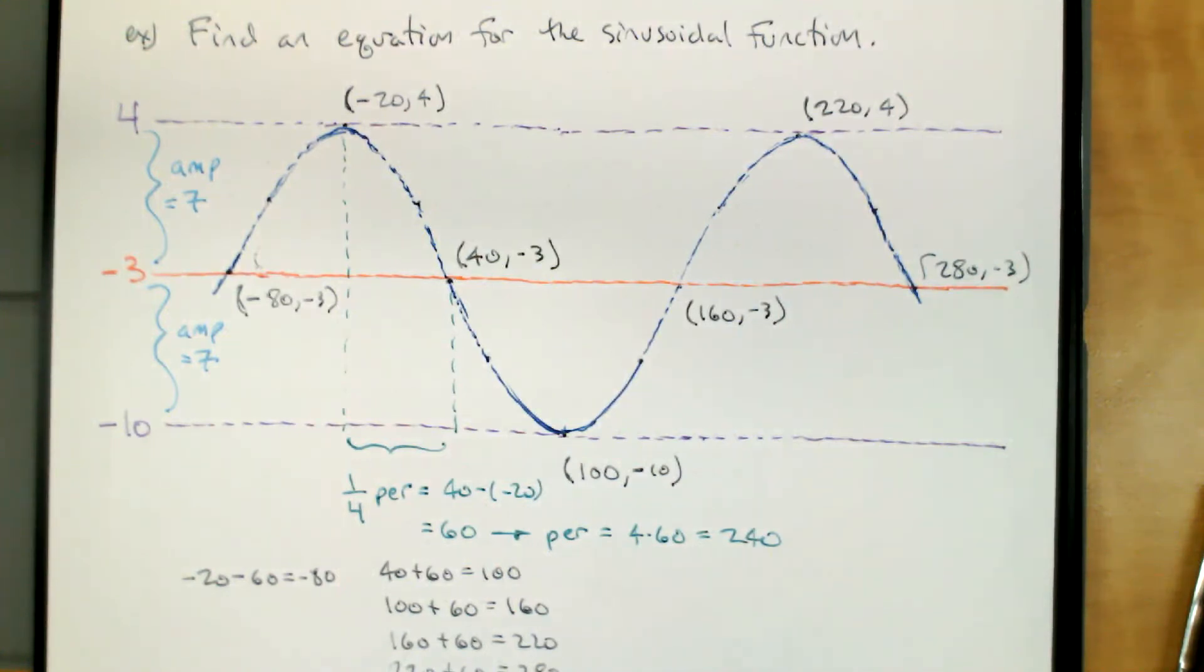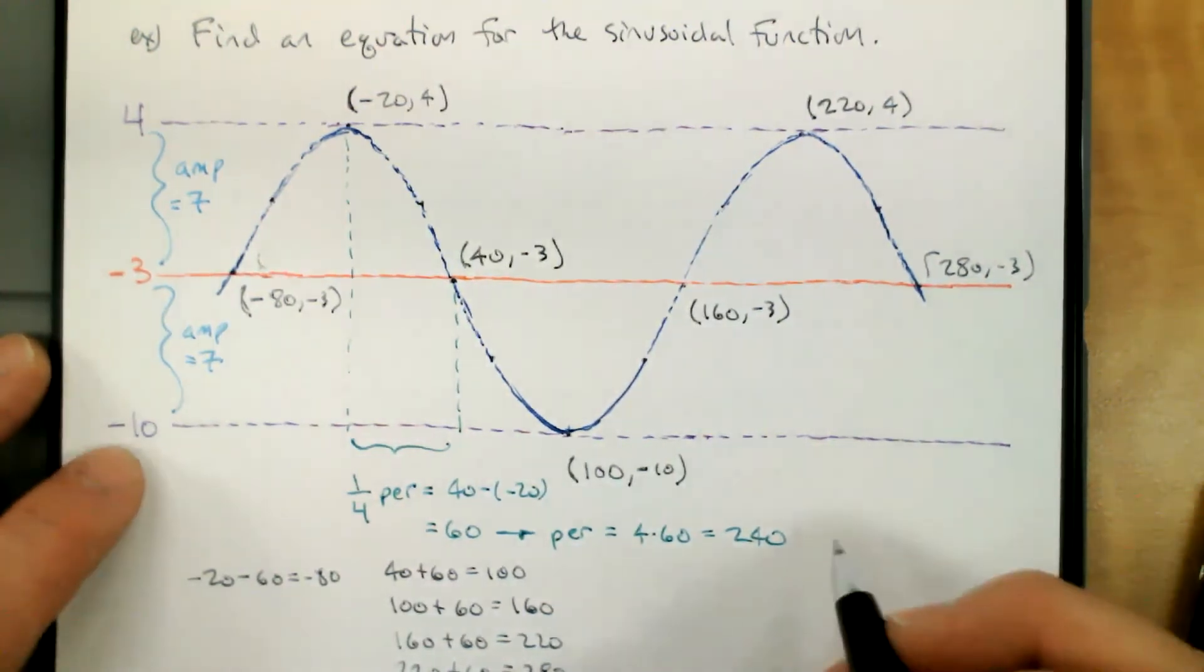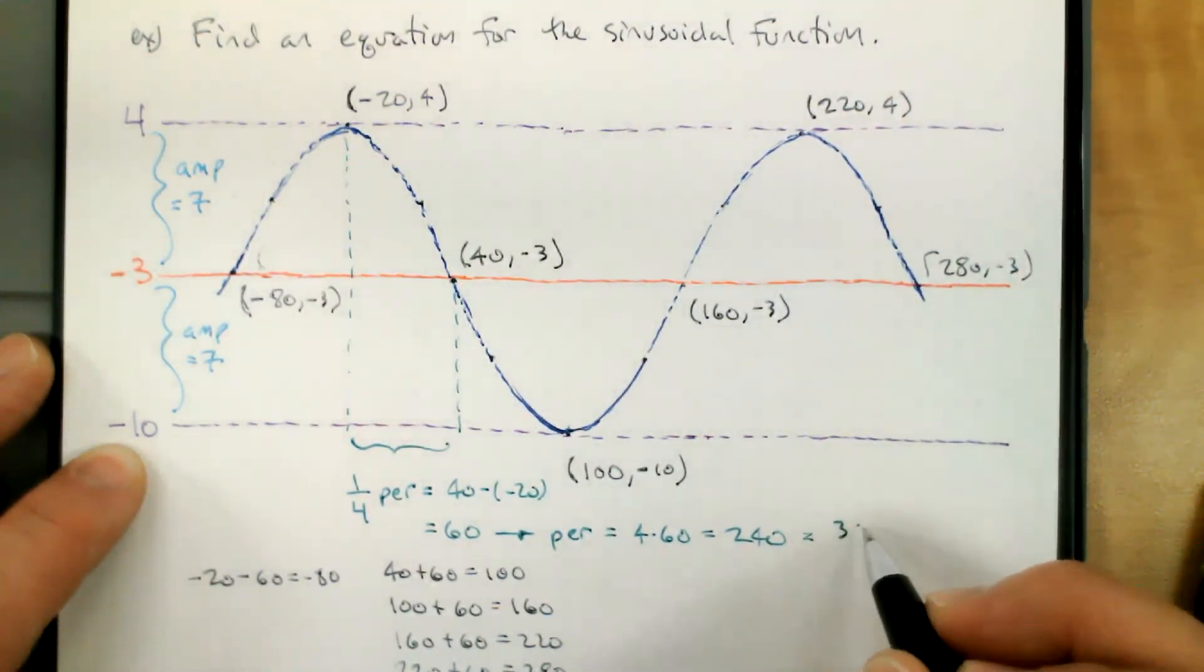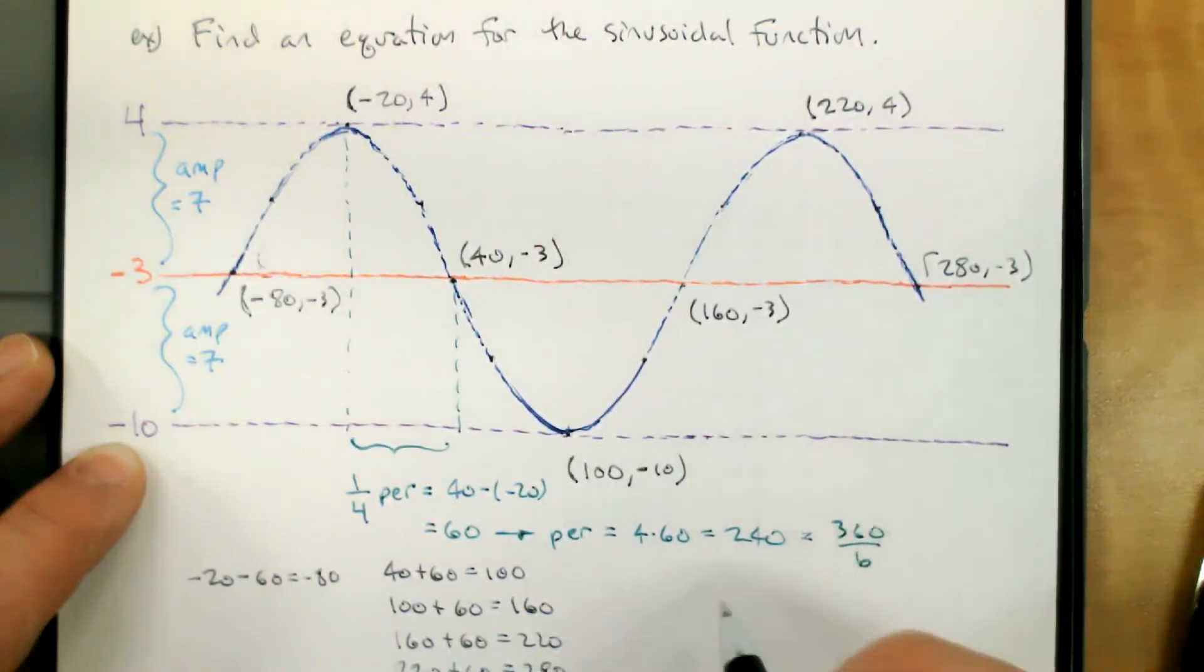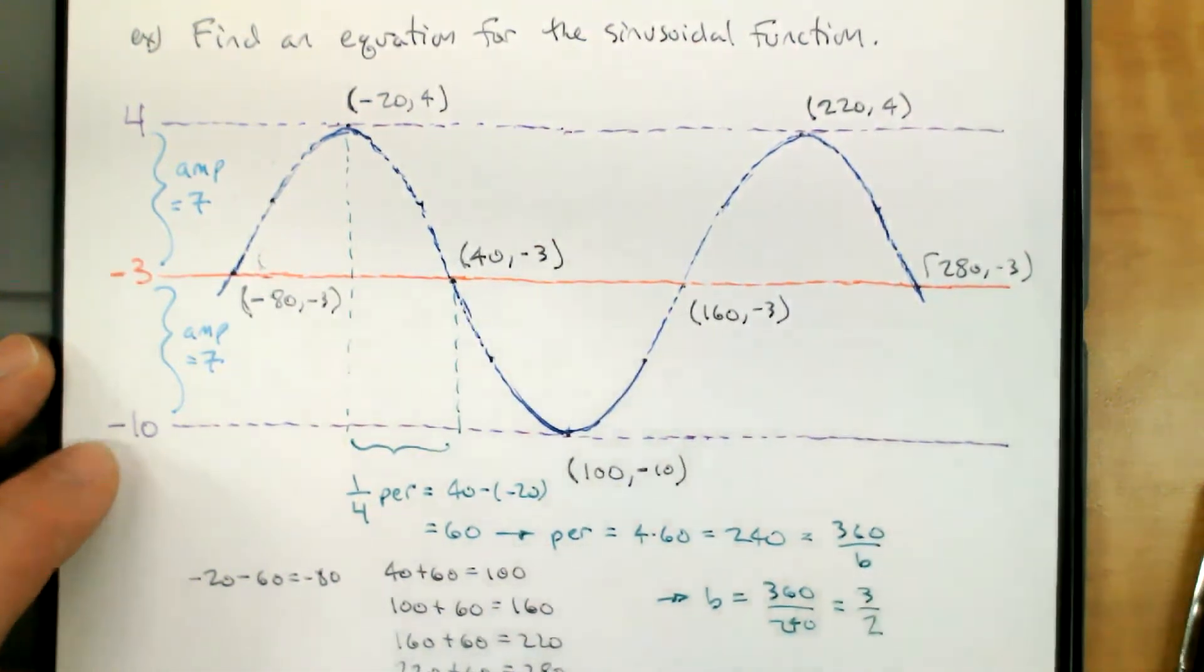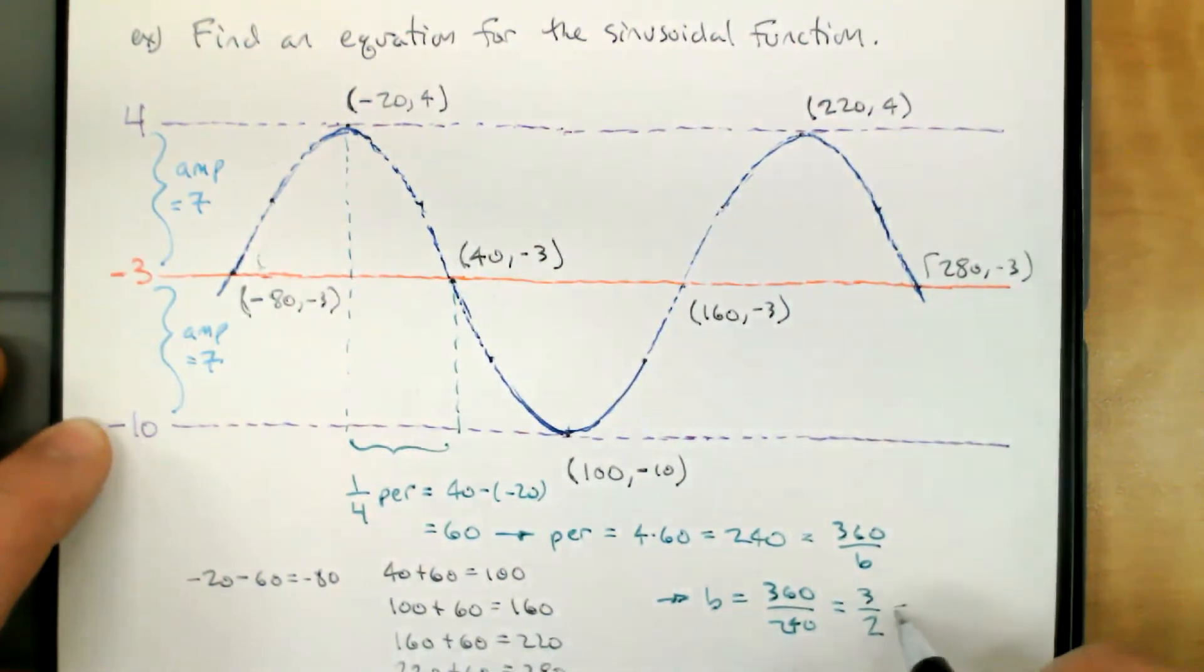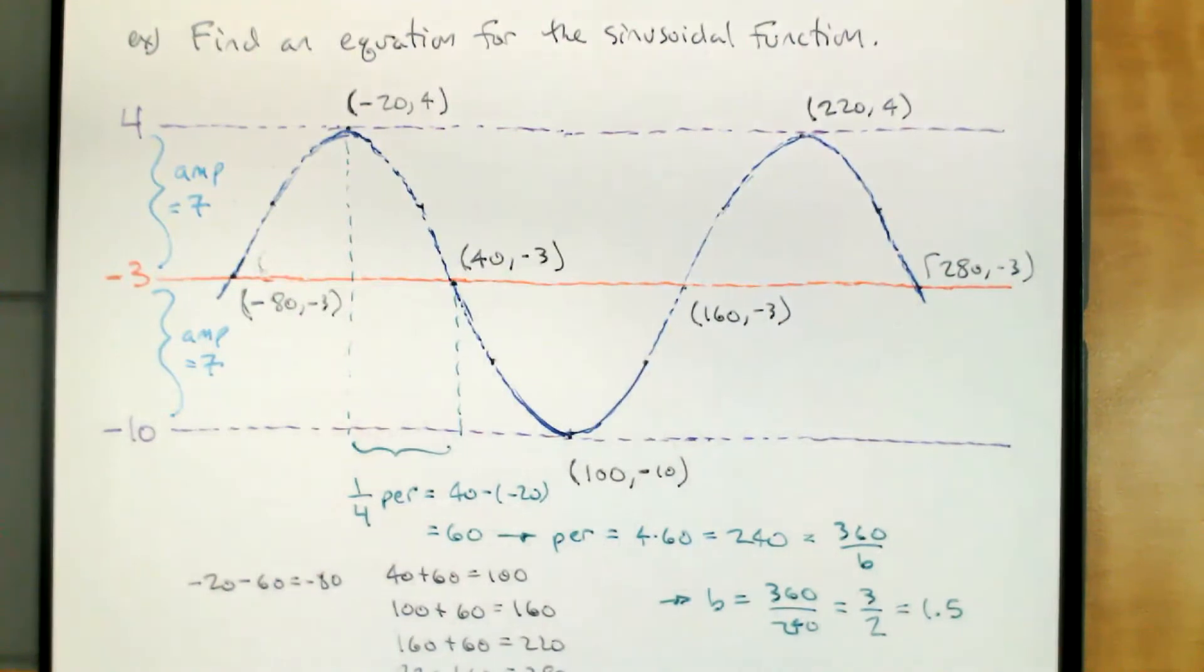Now the 240 is not the number that we plug into the function, that's the period. But if the period is 360 divided by B, then B is 360 divided by the period. So 240 is 360 divided by B, and so B is 360 divided by 240. If I drop the zeros and then divide by 12, that's going to be three halves, or 1.5.